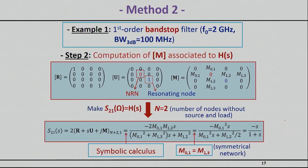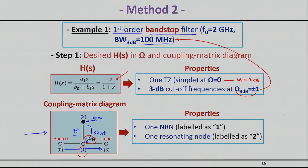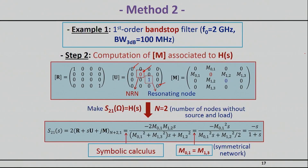Now we have to represent the coupling diagram in the coupling matrix framework. There are two changes compared to before. One change is in the U matrix: previously all main diagonal elements were equal to one except for the source and load entries. Since node 1 is a non-resonating node, we change its diagonal entry from one to zero.